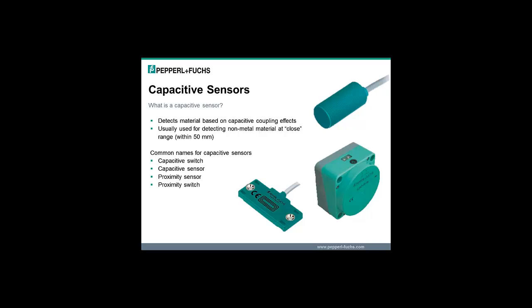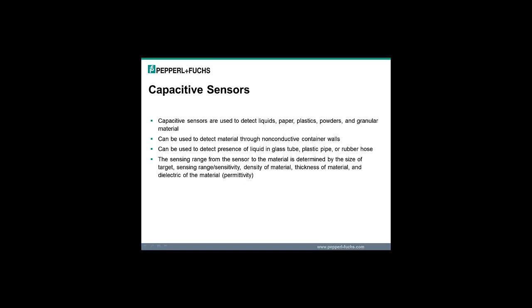The term switch is used interchangeably with sensor because these devices often replace other mechanical switching type devices. Capacitive sensors are used to detect liquids, paper, plastics, powders, and granular material.